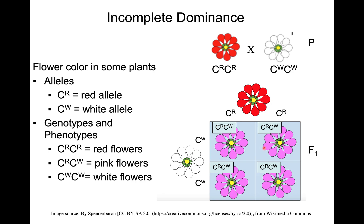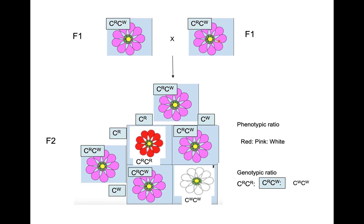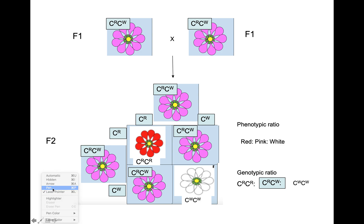What happens when we cross the F1 to itself? We are crossing two heterozygotes. Each of them produces their individual gametes, and when you put them together you get all sorts of different colors. You get red, which is homozygous R; you get white, which is homozygous W; and you get pink, which is the heterozygote. It will be interesting to see what the phenotypic and genotypic ratios are in this case.